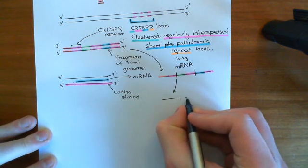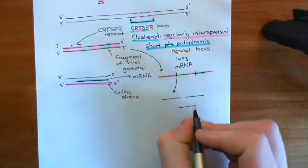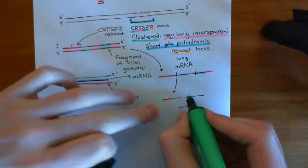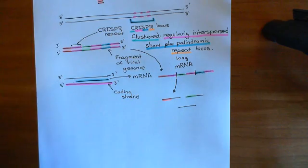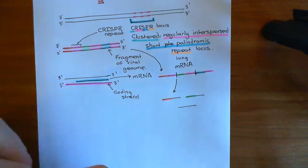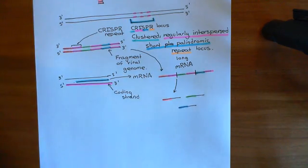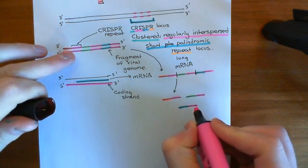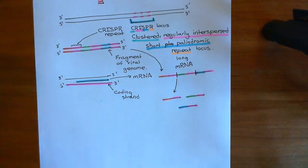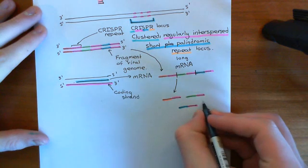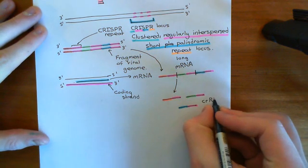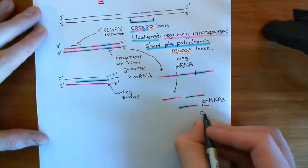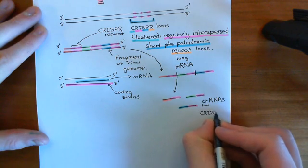What you're going to create are three smaller pieces of mRNA, each of which has a viral genome portion — a piece of mRNA that's complementary to a strand of the viral genome — and also this CRISPR repeat portion, which is complementary to that CRISPR repeat portion on the DNA strand. These much smaller pieces of RNA are known as crRNAs, which stands for CRISPR RNAs — the CR here is short for CRISPR.